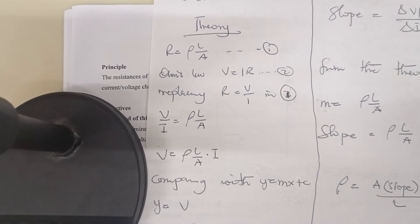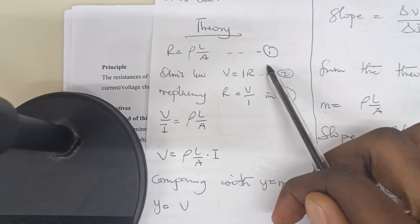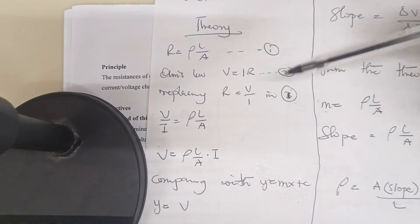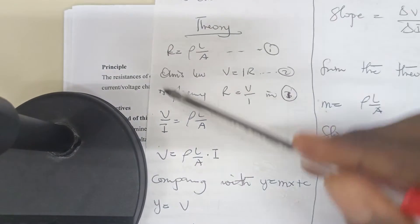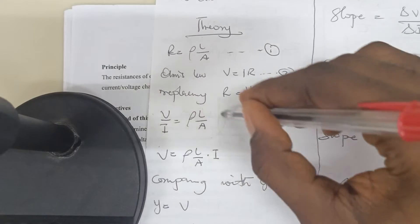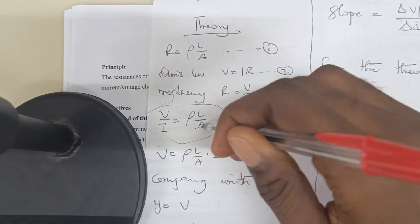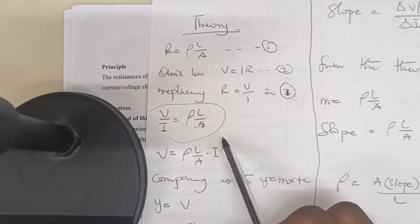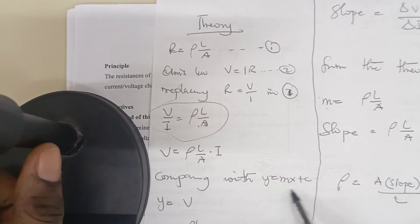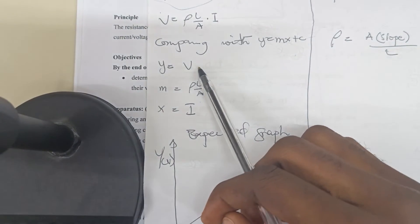We say Ohm's law is this. So if we make R the subject here and replace it here, we'll get an expression like this. Then we can make ρL the subject, and we have this. Now we can compare this to this. When we do that, we'll have this.